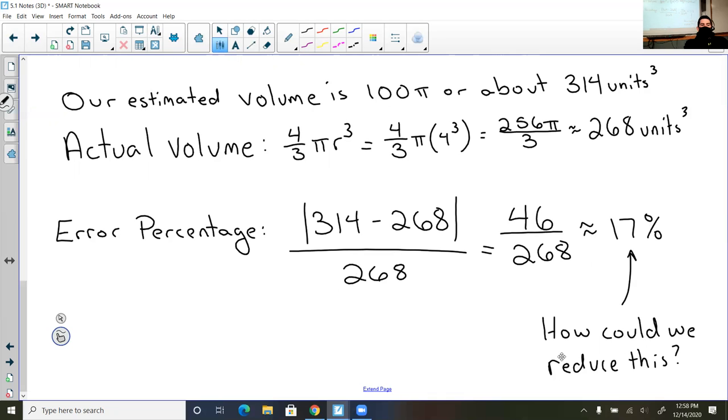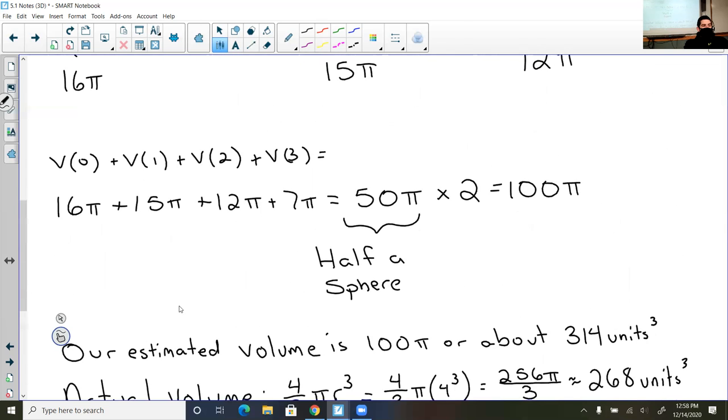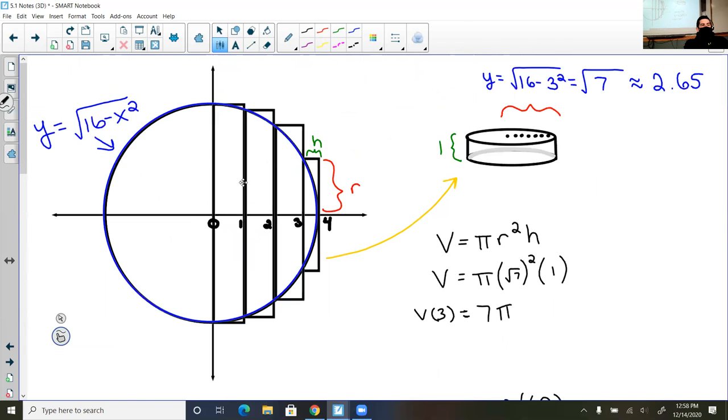And so I think to myself, how could we reduce this? Well, one way could be from my original picture, I could have done maybe 16 cylinders instead of my eight cylinders, or I could have done 32 or 64 or a million cylinders. The more cylinders you have, the less of a chance you would have for all this overlap.